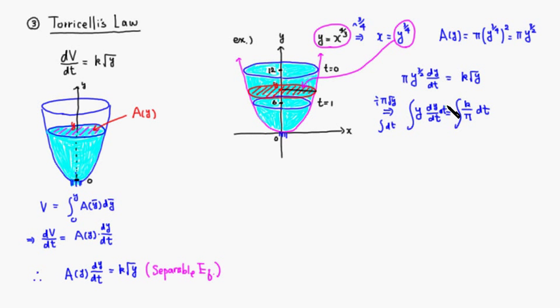Then you can cancel dt here and dt here, so the anti-derivative is actually quite simple. y squared over 2 equals k over pi times t plus some constant c1. We can just multiply both sides by 2.